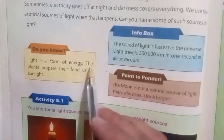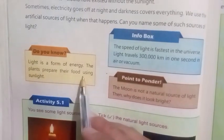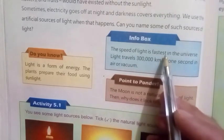Do you know light is a form of energy? The plants prepare their food using sunlight. Info box: The speed of light is the fastest in the universe.